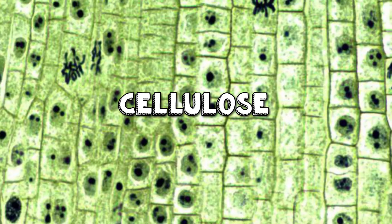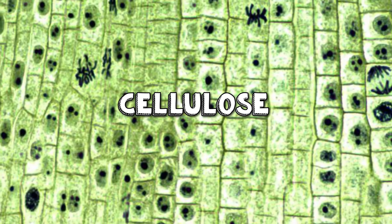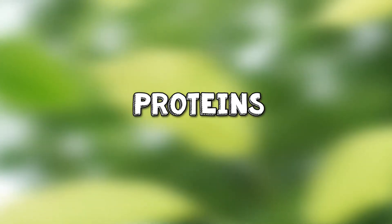This is what gives the plant rigidity. Finally, by combining glucose with nitrates absorbed from the soil through the roots, the plant creates amino acids, which in turn can be joined together to make proteins.